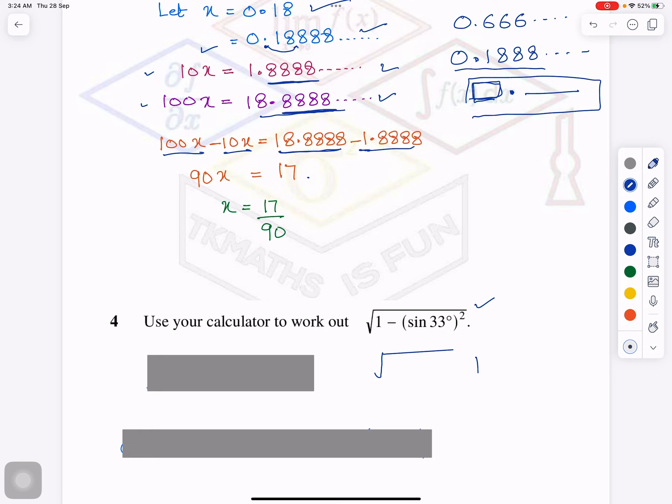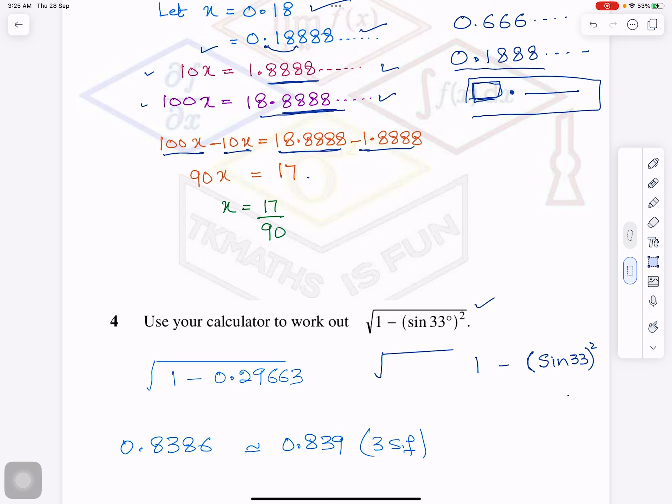Then minus. Then there is a button parenthesis or brackets. Press that. Then it will be sine. Then it will be 33. Then bracket close. And then square root. And then enter. So you will get the answer. And mostly questions are left in three significant figures. I have just done here to show you. Otherwise, you don't need to do stepwise. You need to do it directly.